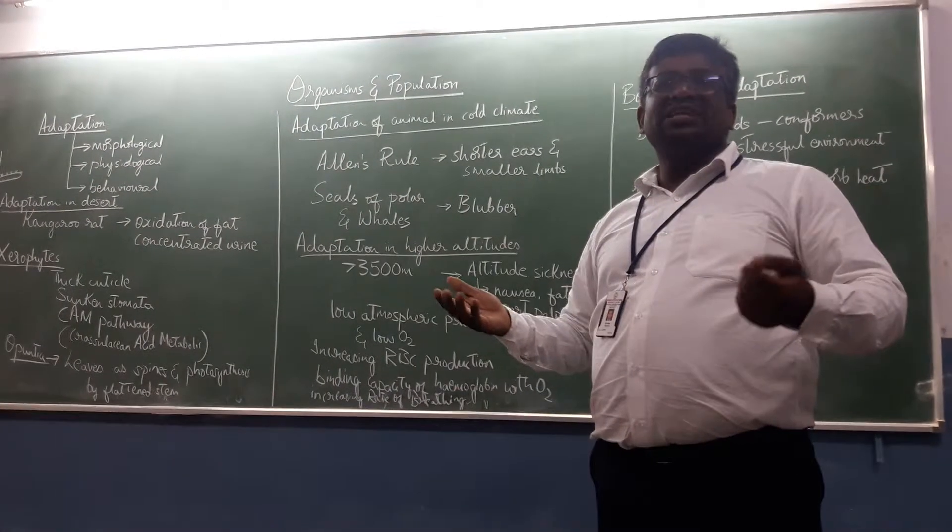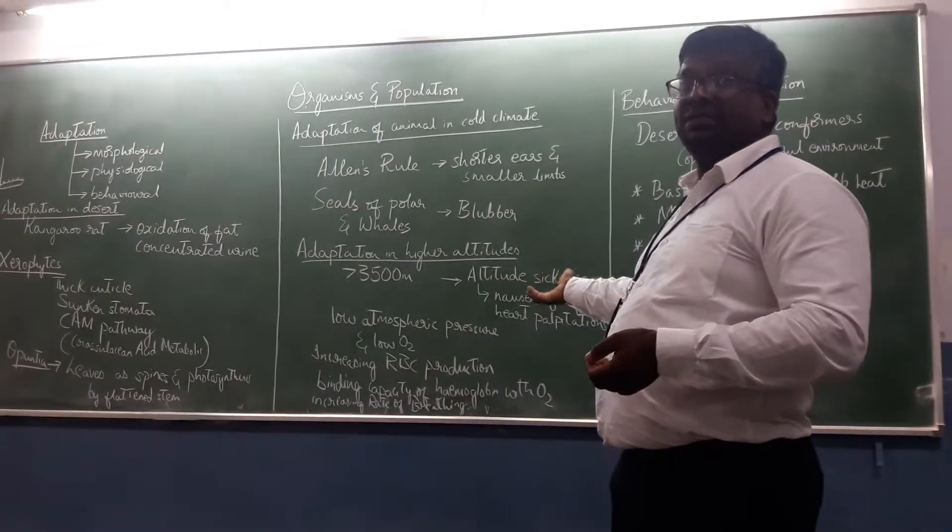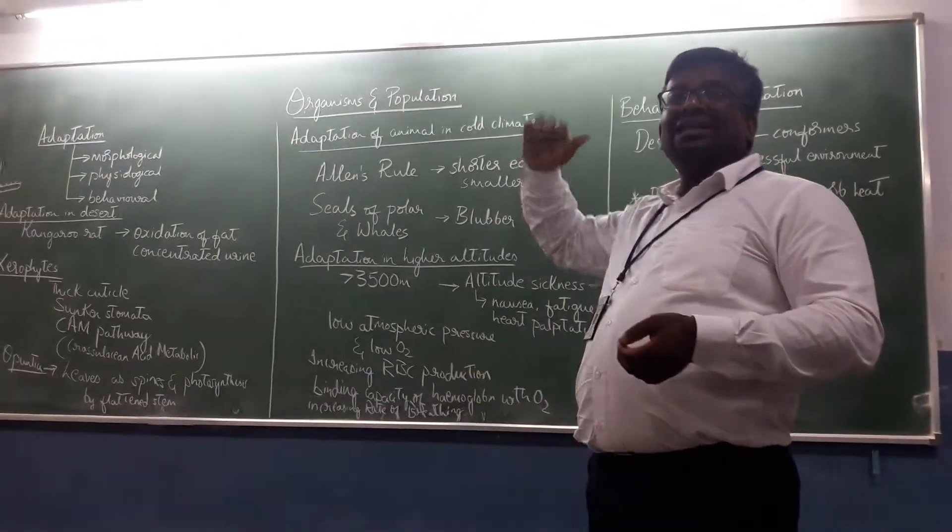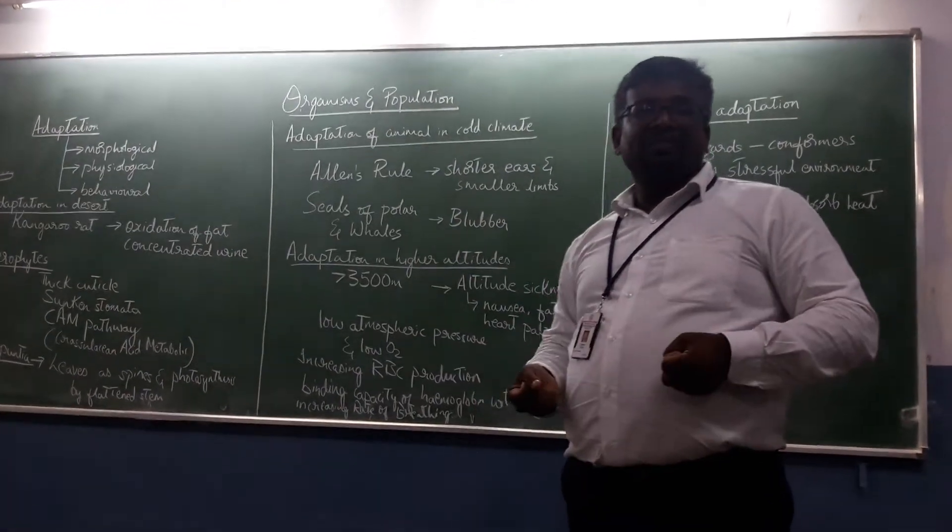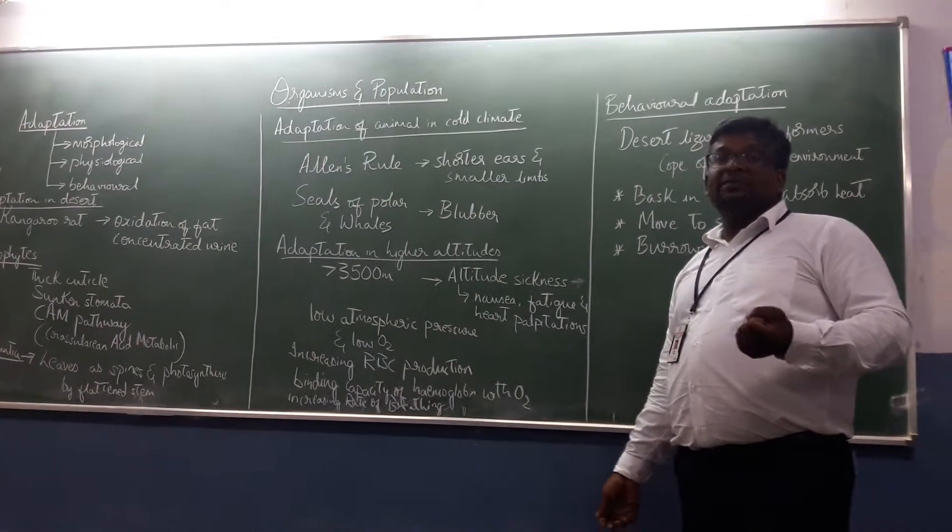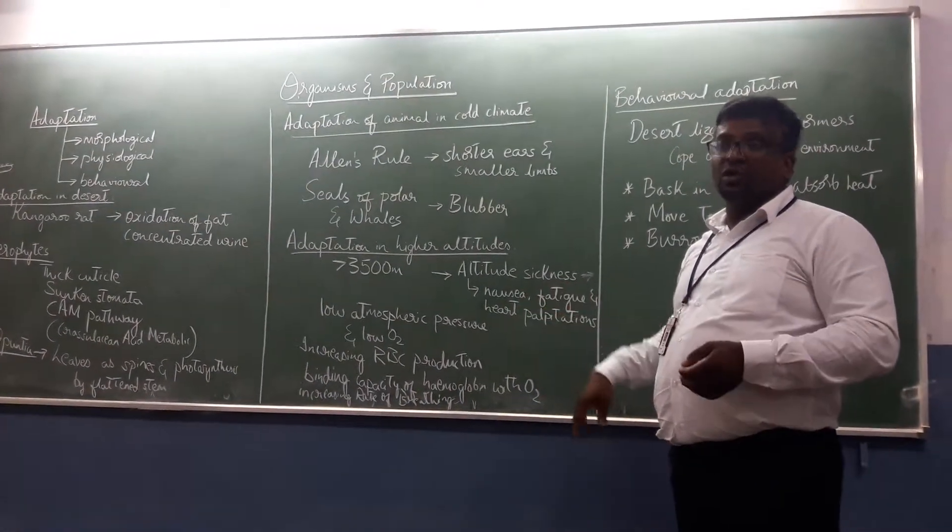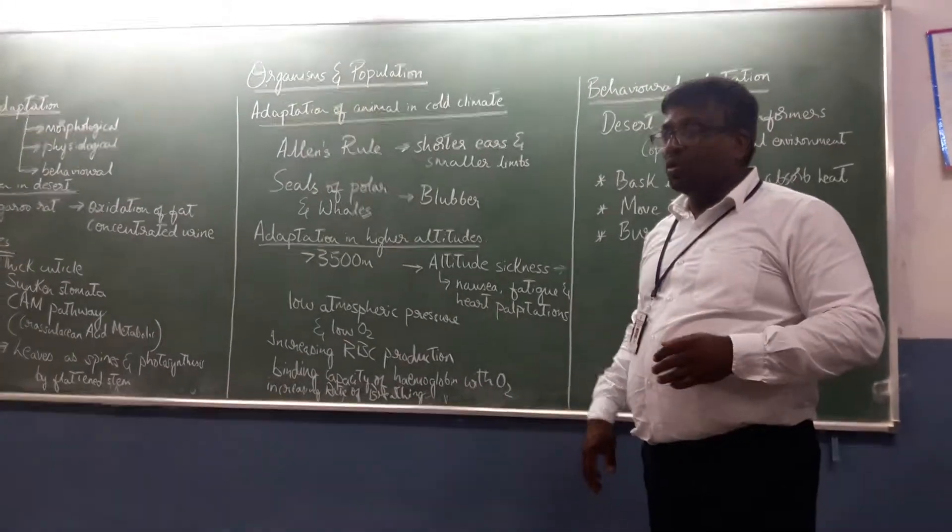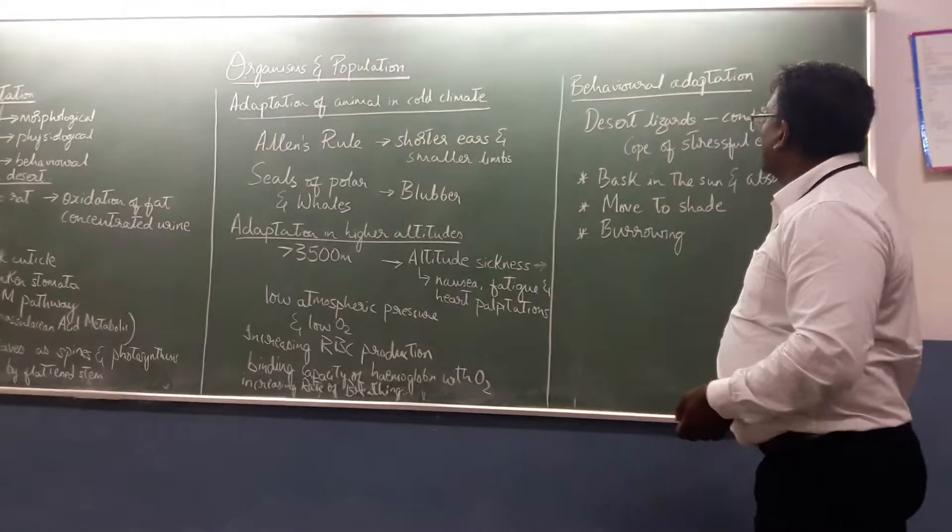So that we take up more amount of oxygen. Normally it would be 16 to 17 times we breathe per minute. But the rate of breathing will be more when you are at higher altitude. It is almost like you are gasping for breath. That is how we overcome this deficiency of binding capacity of hemoglobin with oxygen, by breathing in more oxygen. The rate of breathing will be more.